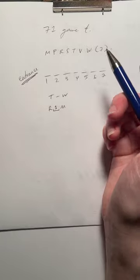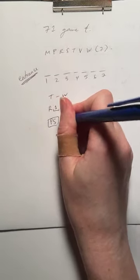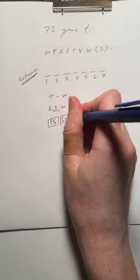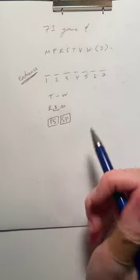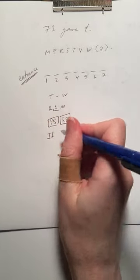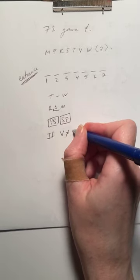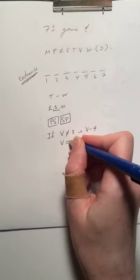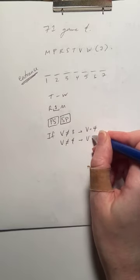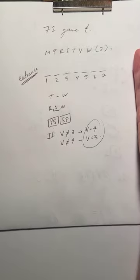P and S must be next to each other. We don't know which one is first, they just have to be next to each other. And then we have a conditional rule. If V is not in the third position, then it has to be in the fourth position. And if it's not fourth, then it has to be third. This is essentially V is either third or fourth.